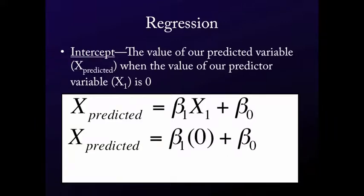Now notice, if your foot size is 0, so you get a score of 0 on our measured variable, that's just going to make that term drop out of the equation. Anything times 0 is 0, and you're left with our predicted score on our predicted variable is just equal to that intercept term, the beta sub 0.